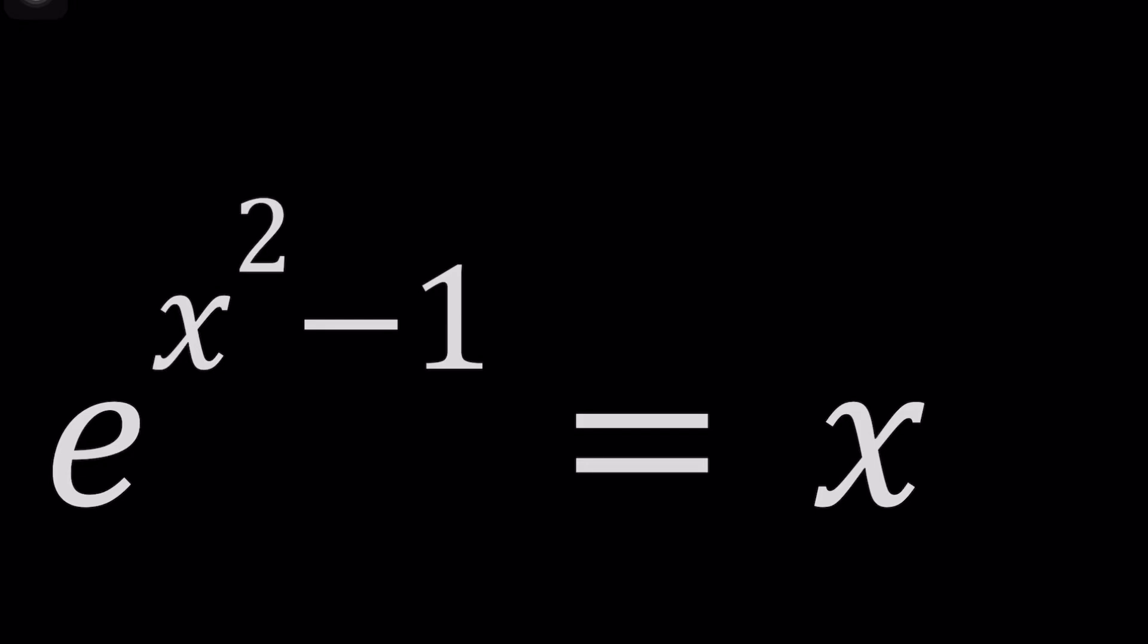Hello everyone. In this video we're going to be solving a non-standard and maybe a transcendental equation. We have e to the power x squared minus 1 equals x and we're going to be solving for x values. Wait, did I say x values? How many values are there? Are there any solutions? Those are good questions. Something to think about.